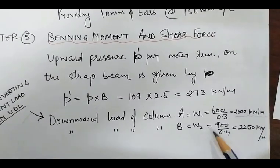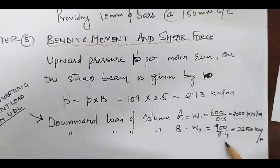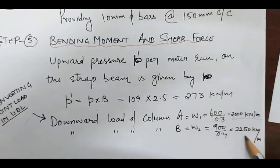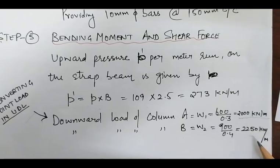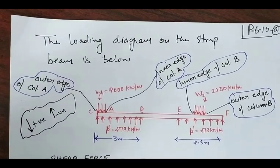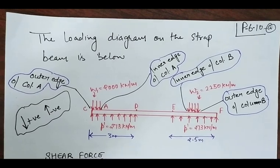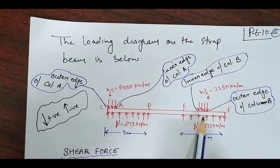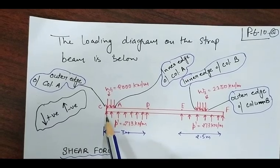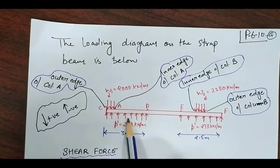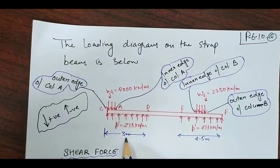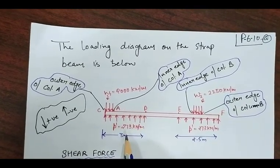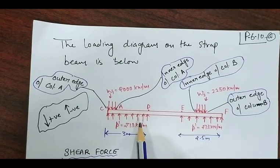For column B, w2 is 900 kilonewton and the width of the column is 0.4m, converted to kilonewton per meter. This gives us the loading diagram on the strap beam. Around the strap beam, up to a length of three meters, the upward soil pressure acts on spread A in the upward direction.